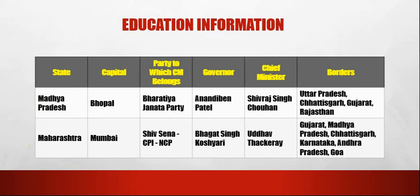The next state is Madhya Pradesh. The capital of Madhya Pradesh is Bhopal. The party to which the CM belongs is Bharatiya Janata Party. The governor is Anandiben Patel. The chief minister is Shivraj Singh Chouhan. The borders are Uttar Pradesh, Chhattisgarh, Gujarat and Rajasthan.